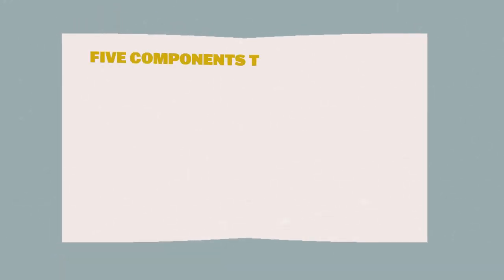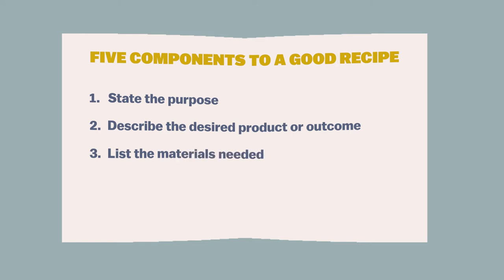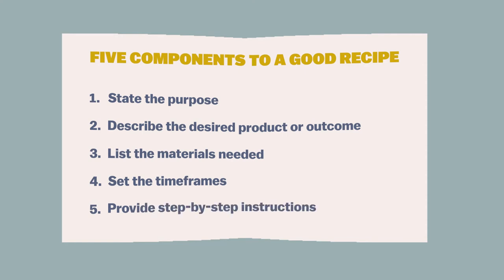There are five components to a good recipe. Let's look at them one at a time. One: state the purpose. Two: describe the desired product or outcome. Three: list the materials needed. Four: set the timeframes. Five: provide step-by-step instructions.